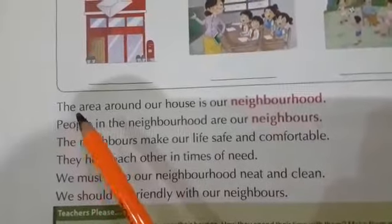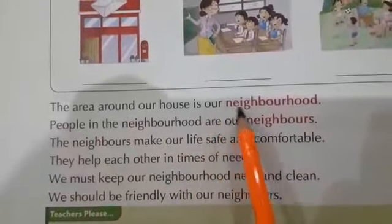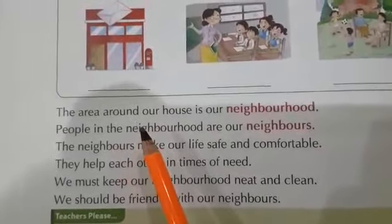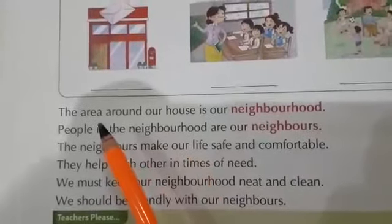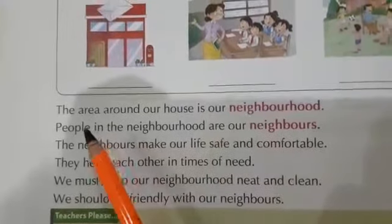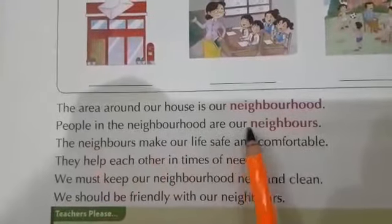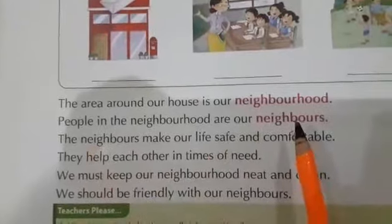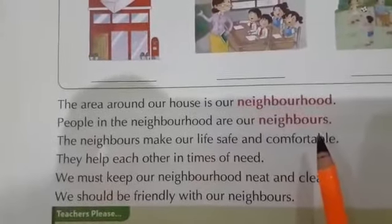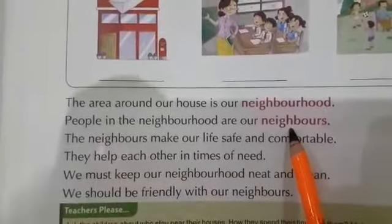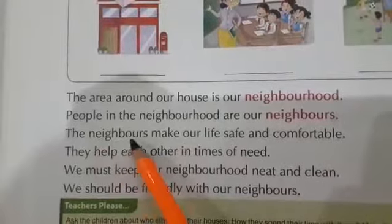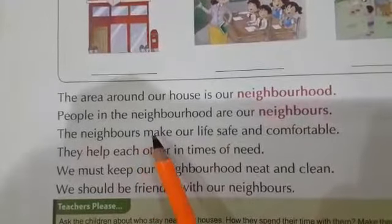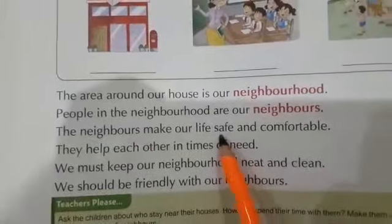The first line: the area around our house is our neighborhood. We call this neighborhood. People in the neighborhood are our neighbors. The people who live around our house — we call them neighbors. These are our neighbors.